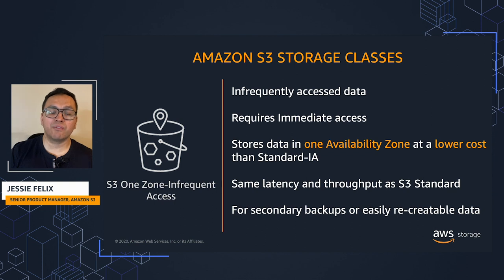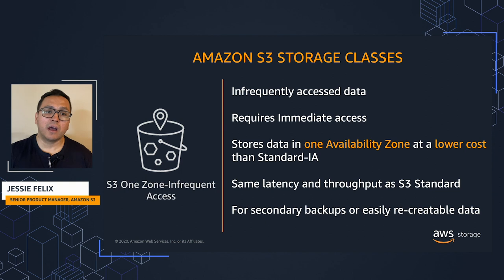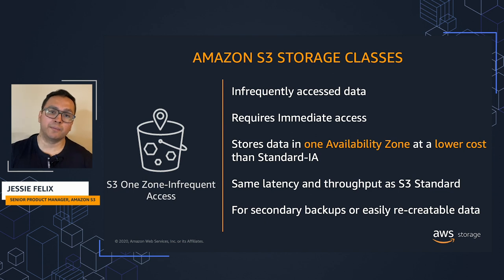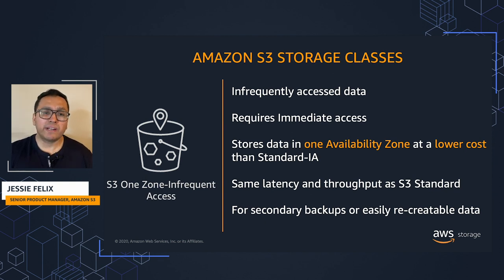Amazon S3 One Zone Infrequent Access is for customers who want a lower cost option for infrequently accessed data that can be stored within a single availability zone. Unlike other storage classes that store data in a minimum of three AZs, One Zone IA stores data in a single AZ at a lower cost than Standard IA. Ideal use cases include secondary backups of on-premises data, or for data that can be easily recreated because it is replicated in another AWS region.